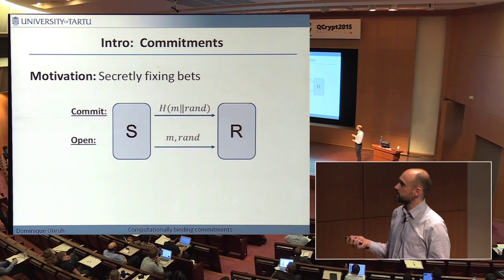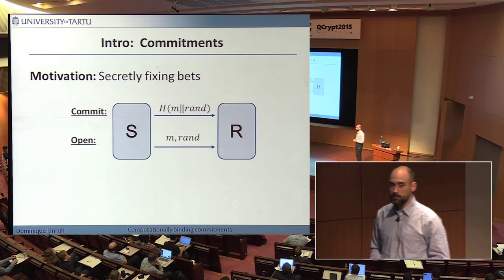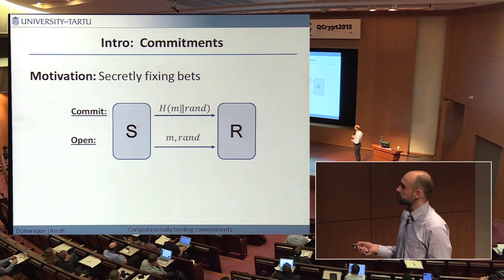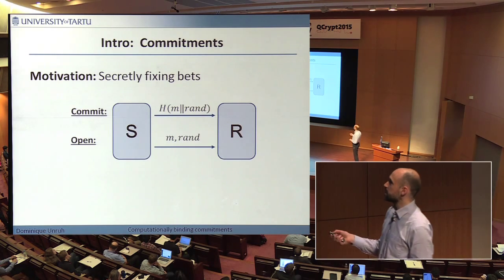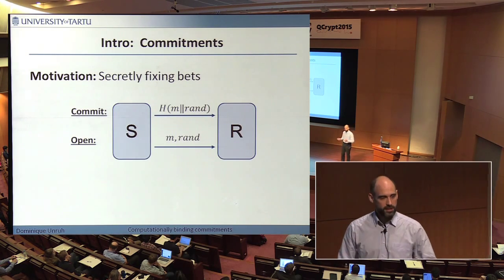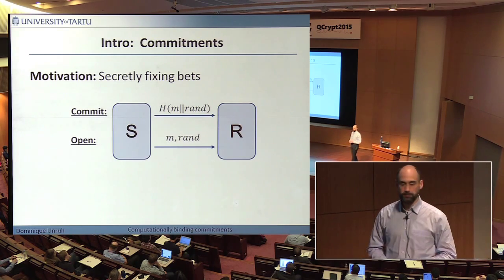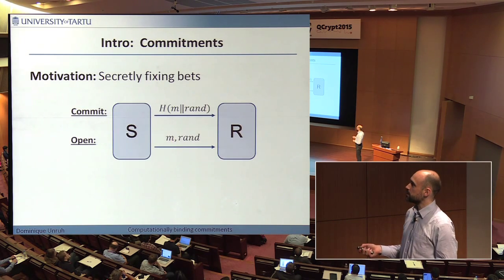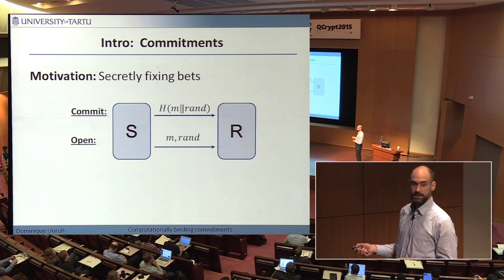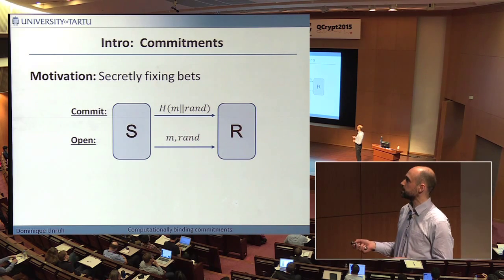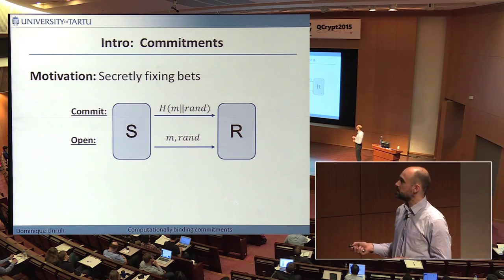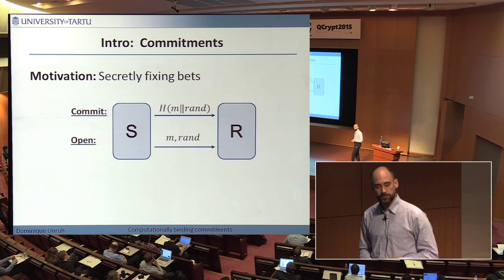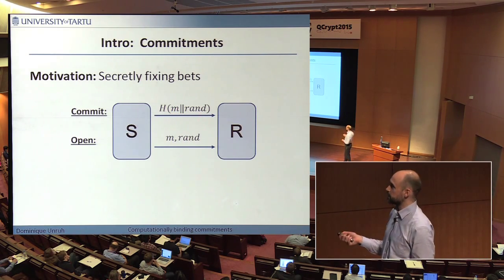So you have two phases. In the first phase, the sender has some message m — like the name of the horse — takes the message, appends some randomness to it, and then applies some hash function to the whole bunch and sends this to the recipient. If we do things right, this will leak nothing about the message m. Later, after the race is over, the sender does the open phase by revealing the horse name and the randomness, and the recipient can check by hashing these two things to verify the commitment.